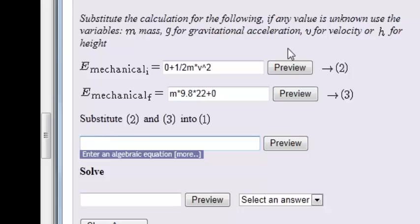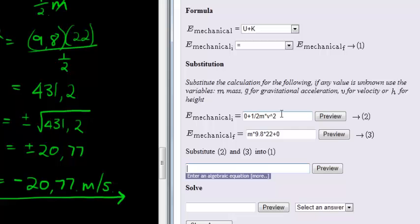And now we substitute this equation 2 and equation 3 into the original. In other words, before is equal to after when we talk about mechanical energy. And that's where we had a half mass times velocity squared is equal to mass times 9.8 times 22. Preview.